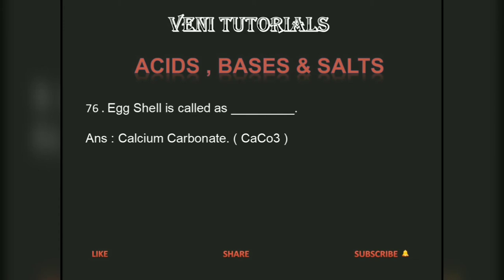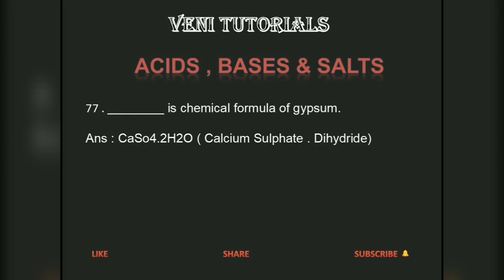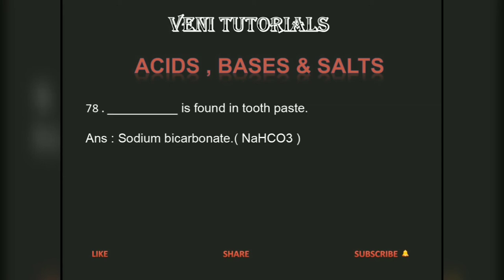Egg shell is calcium carbonate, with chemical formula CaCO3. The chemical formula of gypsum is CaSO4·2H2O — calcium sulphate dihydrate. Sodium bicarbonate (NaHCO3) is found in toothpaste.